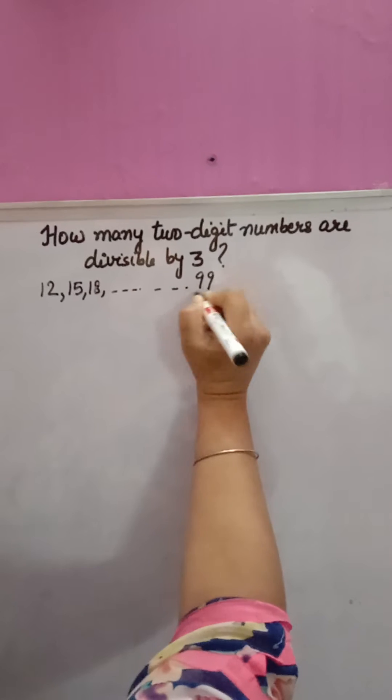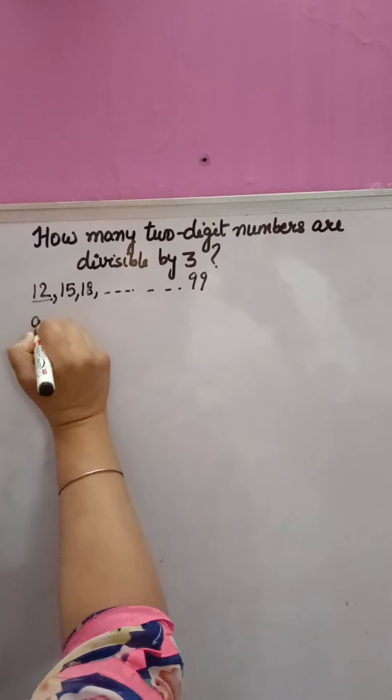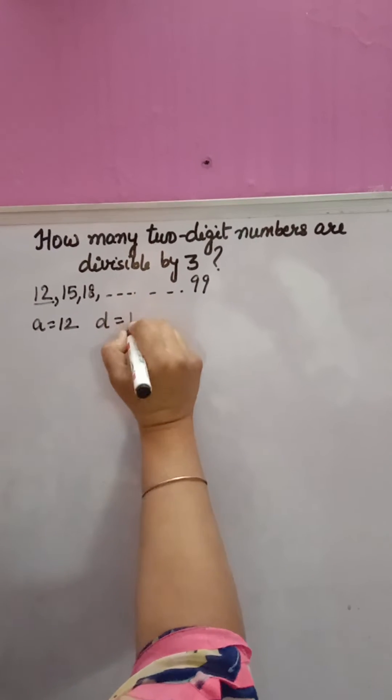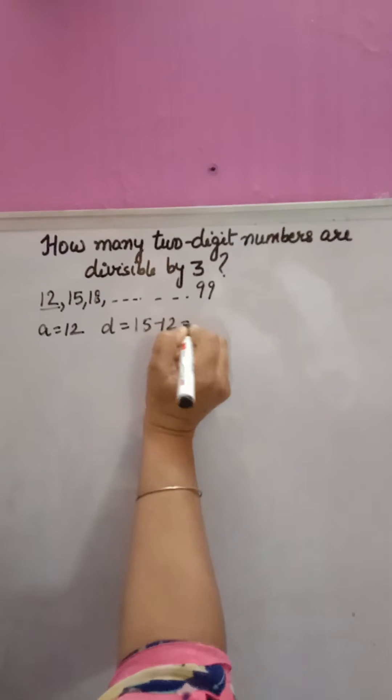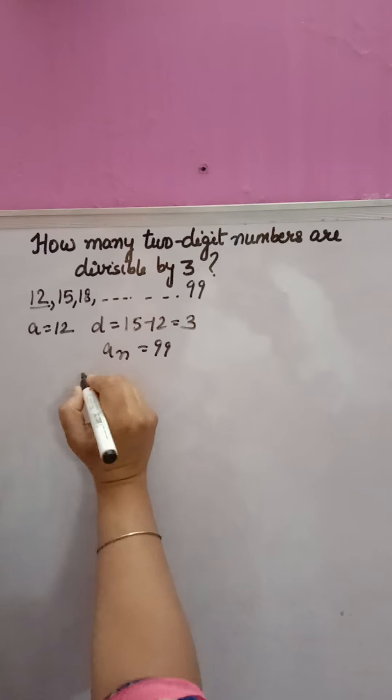So the first number a is equal to 12. The common difference d between consecutive numbers, 15 minus 12, is 3. And the last term is 99. Now you have to calculate n.